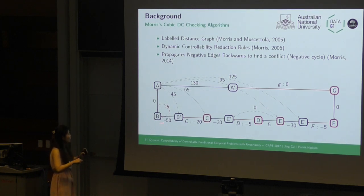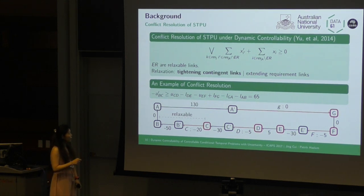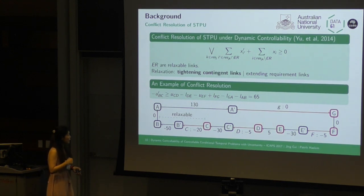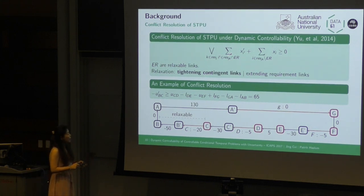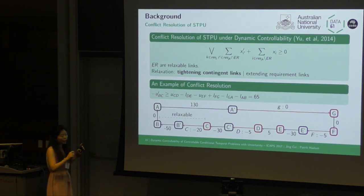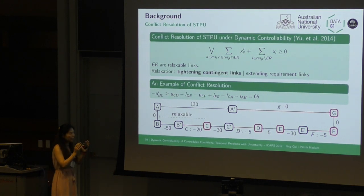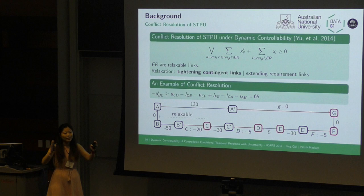After finding the conflict, Yu and co-authors introduced conflict resolution using disjunctive linear constraints. In this conflict resolution, we can relax the bounds in order to solve a conflict. Relaxing means either tightening the contingent links — reducing the uncertainty — or extending requirement links, which means extending flexibility to deal with those uncertainties.